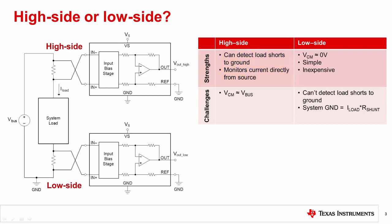A low side implementation has the shunt resistor placed between the load and system ground. This is the most common method to monitor current since the common mode voltage is essentially zero volts. However, this also disturbs the ground seen by the load as well as prevents the detection of load shorts to ground.